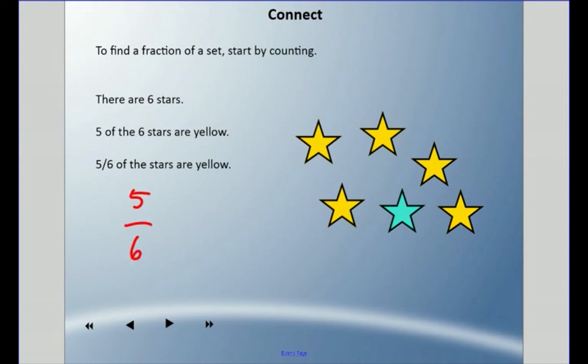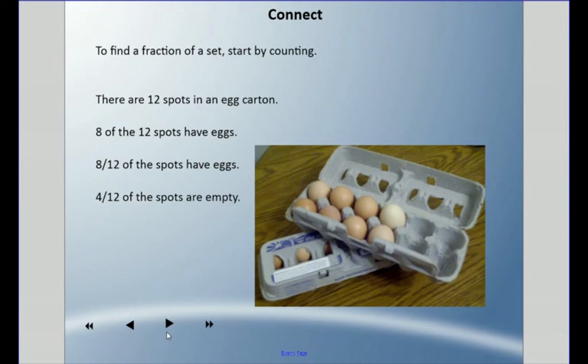I could also say one-sixth is blue, but five-sixths of these stars are yellow. I could also say that there are twelve spots in an egg carton, a dozen as we say, and eight in this top carton here.